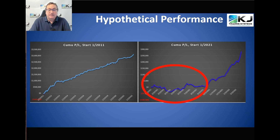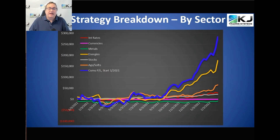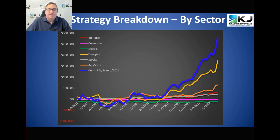The real consistency in algo trading is that you consistently build systems the same way and consistently run and automate them. You can't control the consistency of the actual results. In this case, I'm trading a portfolio that is doing really well right now, but a year ago it was just kind of break-even. I think that's an important point to understand.